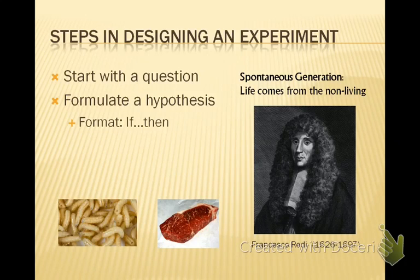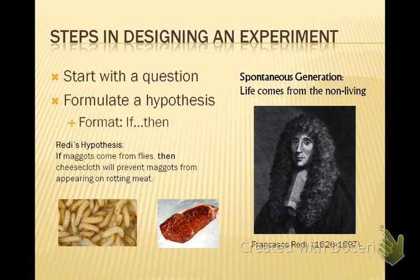Redi obviously did not believe this and designed an experiment. His hypothesis — which should always be formulated as an if-then statement — was: if maggots come from flies, then cheesecloth, which is a thin muslin cloth, will prevent maggots from appearing on rotting meat.